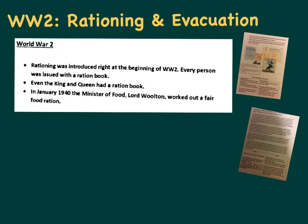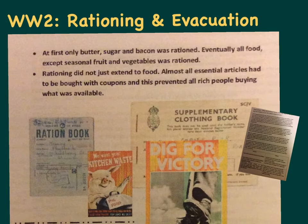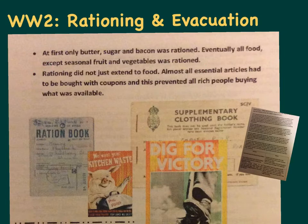What about World War II? In World War II, rationing was introduced right at the beginning of the war - unlike WWI where it came in the final year. Every person was issued with a ration book; even the king and queen had one, largely for morale. In January 1940, the Minister of Food, Lord Woolton, worked out a fair food ration. At first only sugar, bacon and butter were rationed, but eventually all food was rationed except seasonal fruit and vegetables, which could be picked from hedgerows.